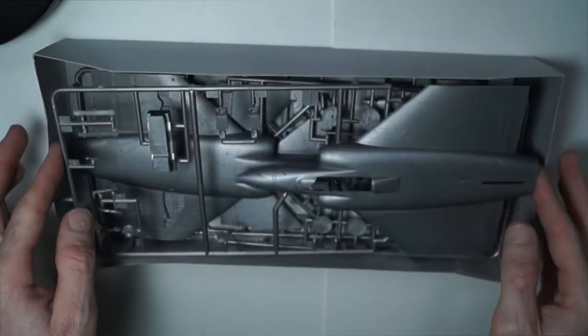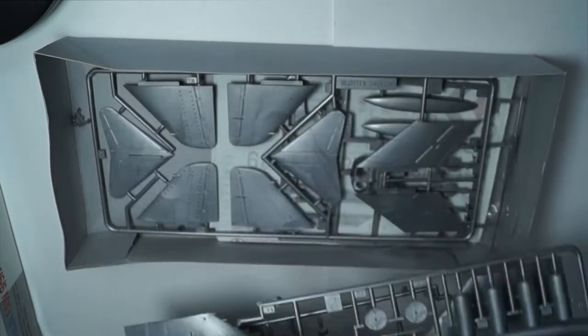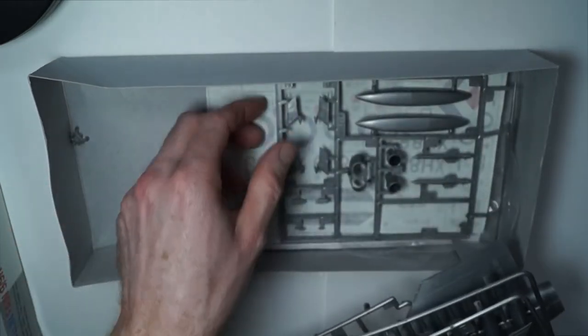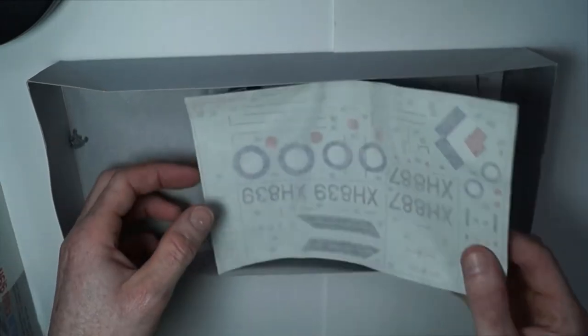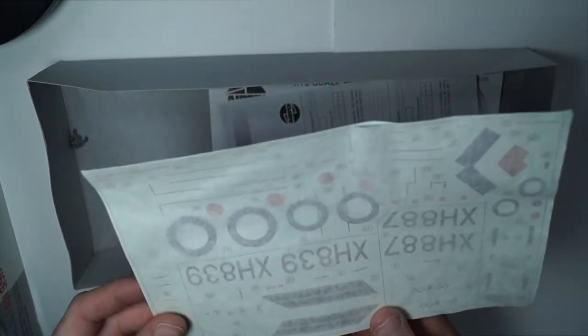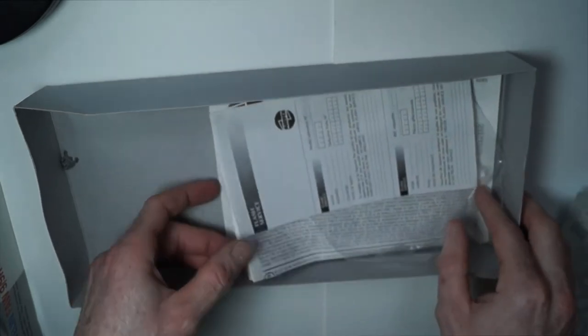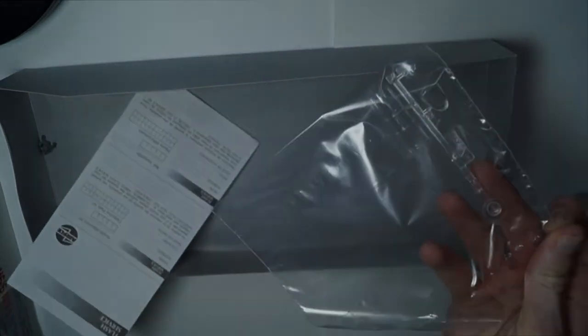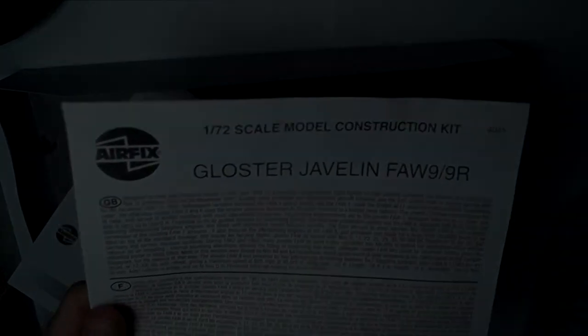So inside the box you get four sprue sheets, the instruction sheet, the instructions, the decal sheet, clear parts and the instruction sheet.